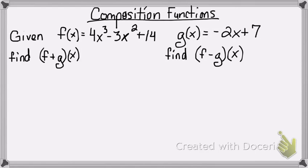All right, given the function f of x equals 4x cubed minus 3x squared plus 14 and g of x equals negative 2x plus 7, I'm going to find out how to find f plus g of x.